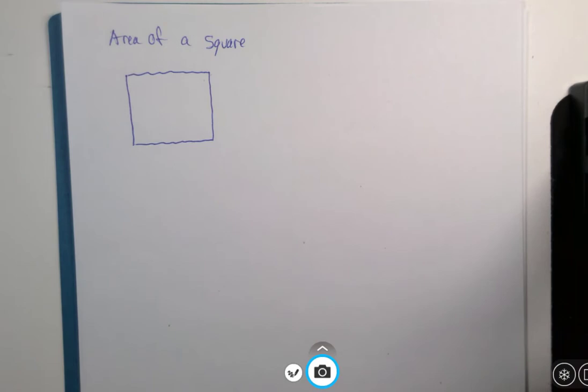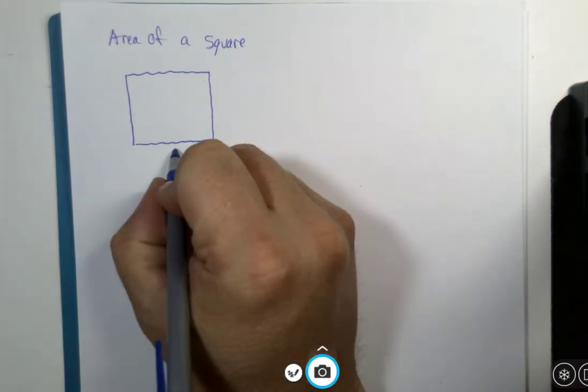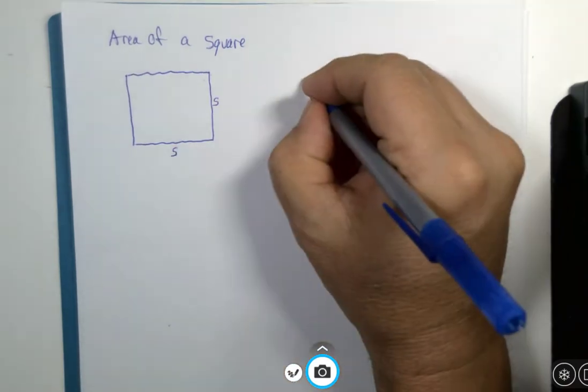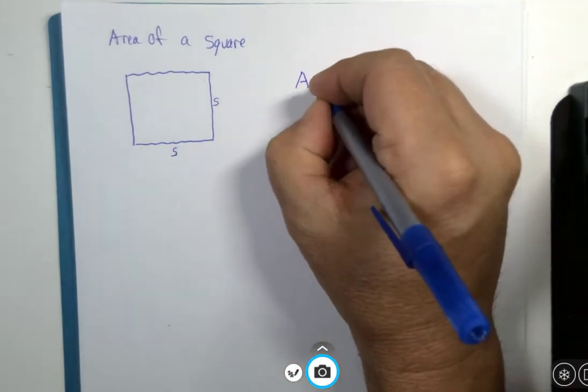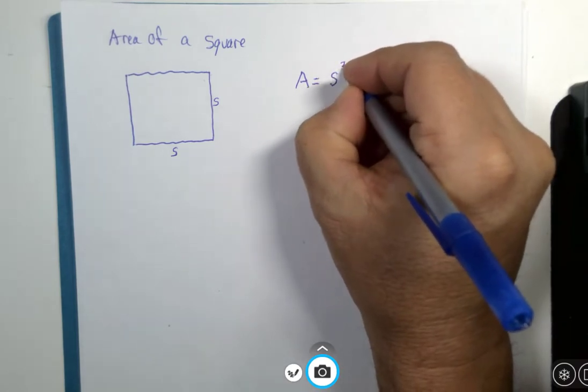The area of a square. This is a square. If each side has length s, we would say that the area of the square is s squared.